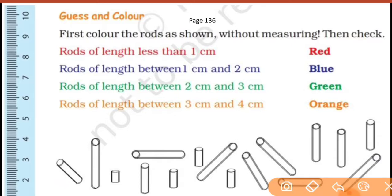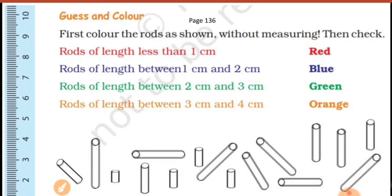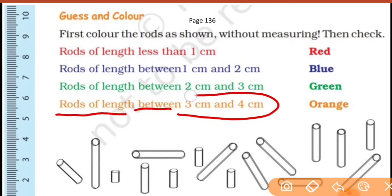Number 3: rods of length between 2 cm and 3 cm — more than 2 cm but less than 3 cm — you will color those with green color. Next, rods of length between 3 cm and 4 cm — between 3 cm and 4 cm — you will color those with orange color.